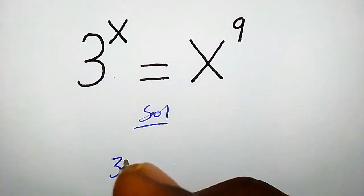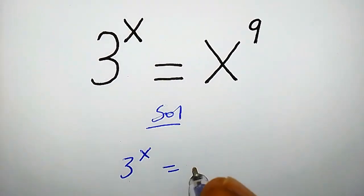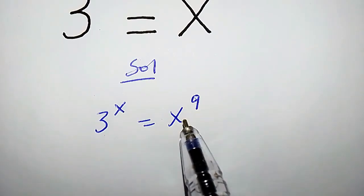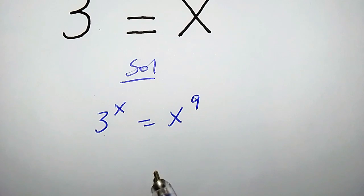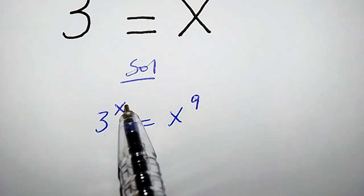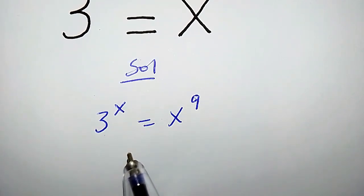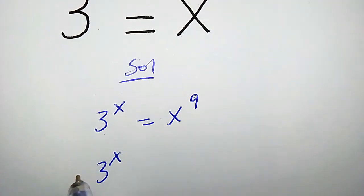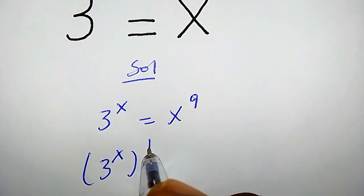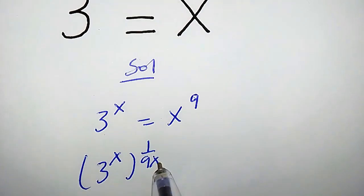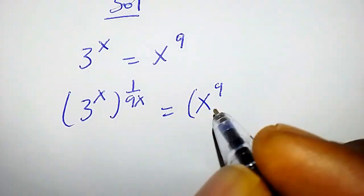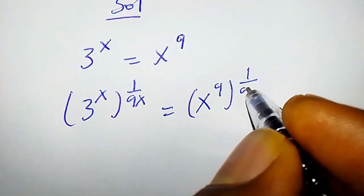Solution. We have 3 to the power of x equals to x to the power of 9. The trick here is that we are going to multiply both powers by 1 over 9x. So we are going to have 3 to the power of x times 1 over 9x equals to x to the power of 9 times 1 over 9x.